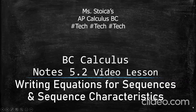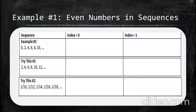Hi there, BC Calc. This is your video for 5.2, Writing Equations for Sequences and Sequence Characteristics. I've already worked on this in Lesson 5.1, but I wanted to be more explicit about showing you some examples of how to write special sequences and how to do an index shift — how do you write the sequence equation starting at different indices. We're going to do examples for 0 and 1, but you could theoretically start your index at any point.